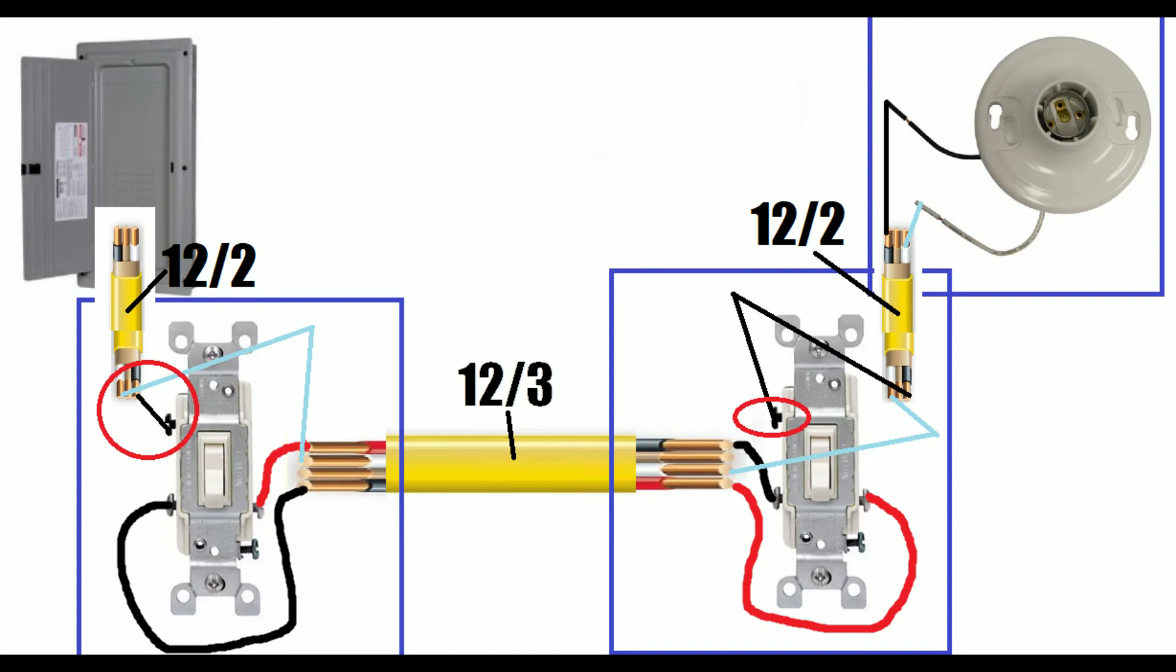The final step here is to connect your black screws. One of your black screws goes to the source of the panel or the constant hot, and the other black screw goes to your load. In this case, it's the light. It's that simple.